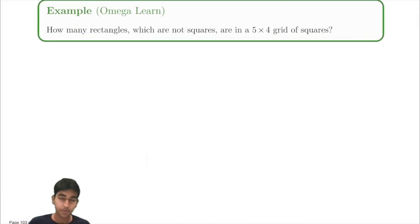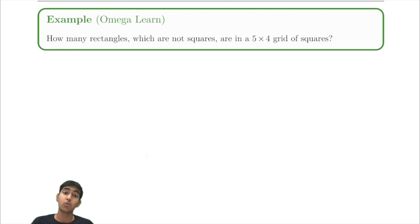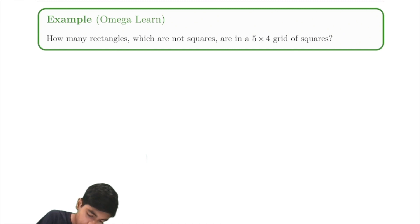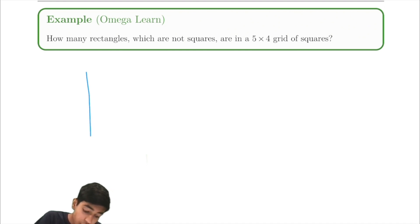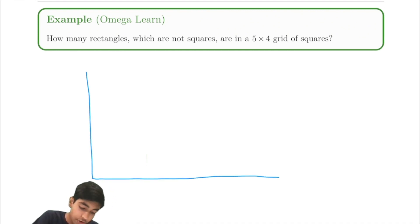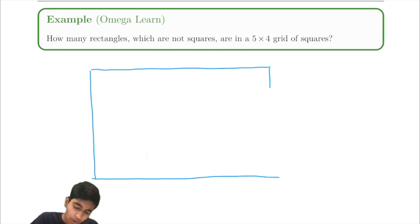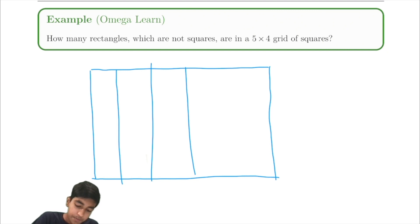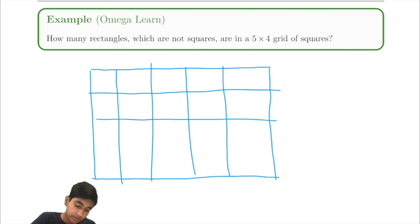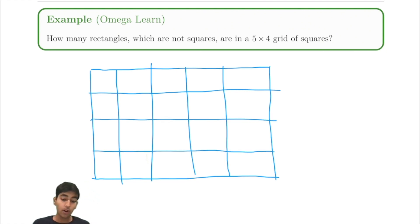Let's look at this problem: how many rectangles which are not squares are in a five by four grid of squares? The tricky part is that we're trying to count rectangles which are not squares, because squares are indeed rectangles. So we can do this by using complementary counting — we find the number of rectangles and then subtract the number of squares.